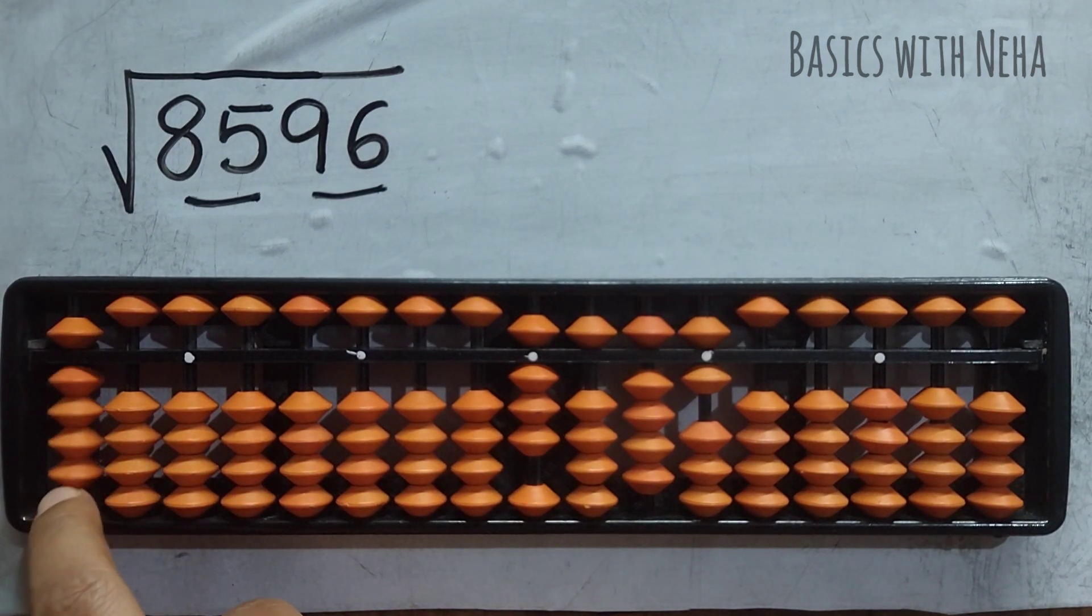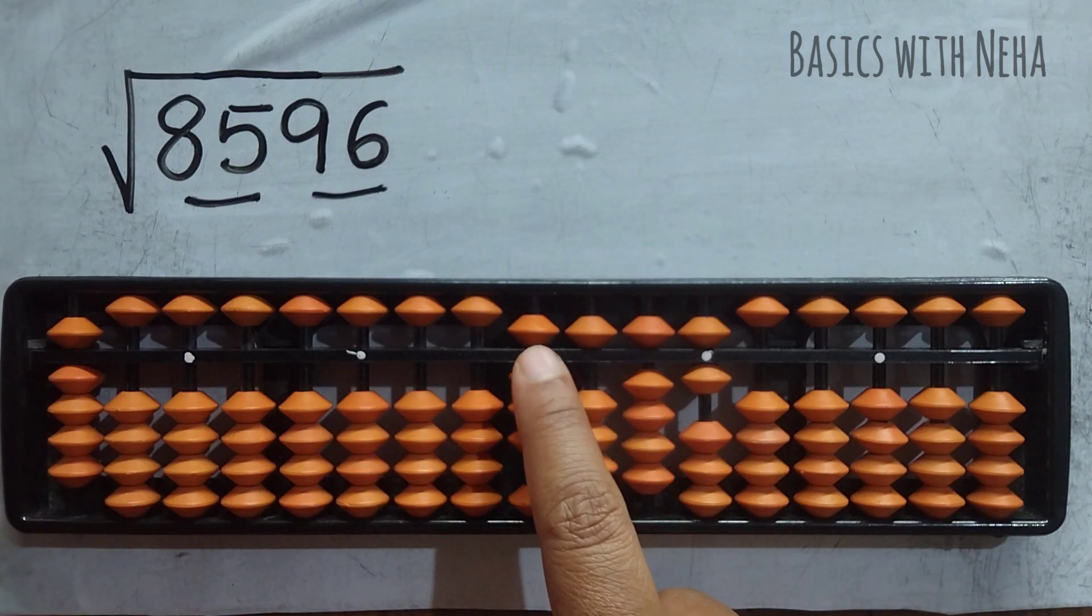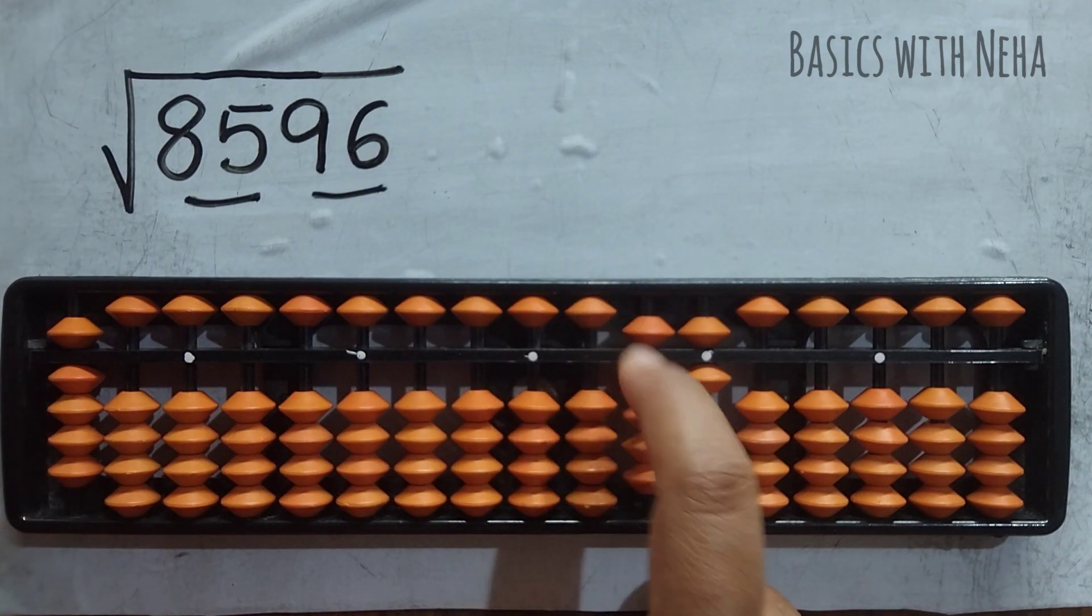So I'm going to take 9. Let me take it here. 9, 9 squared is 81. So I'll remove 8 and I'll remove 1.